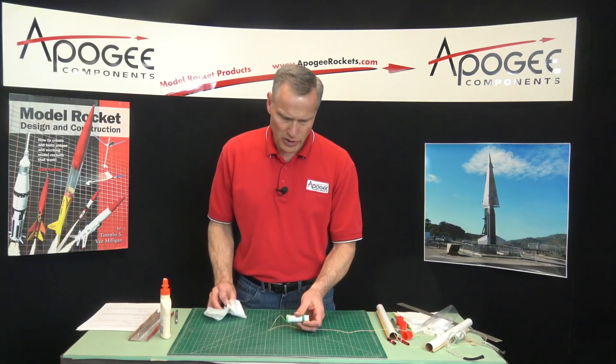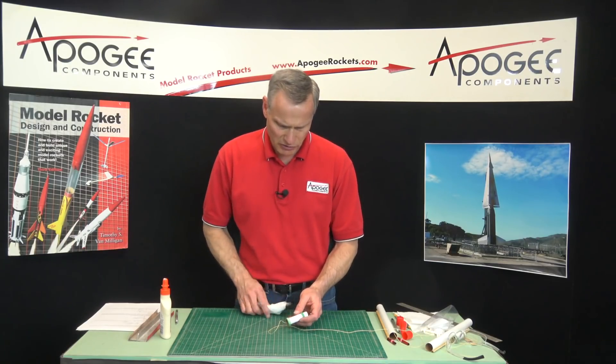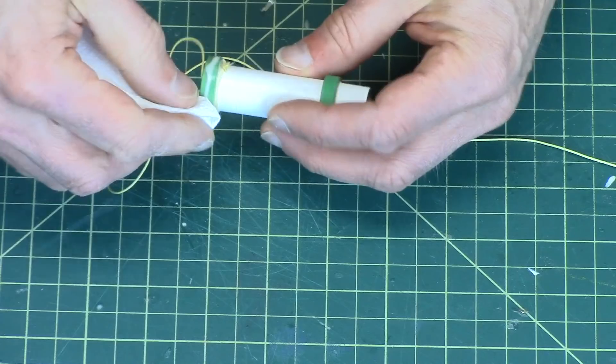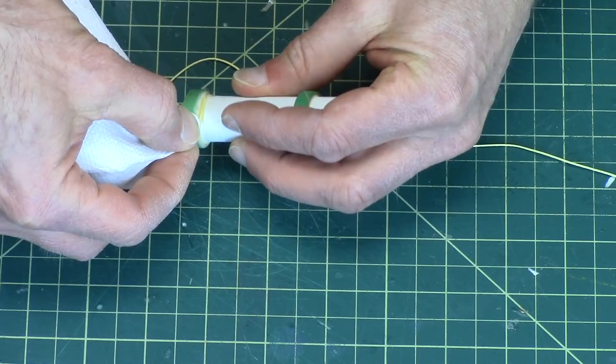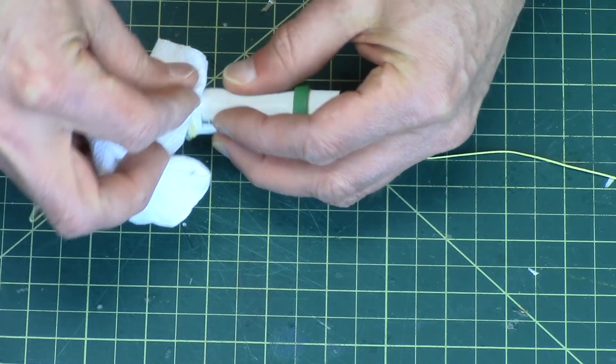Now any glue that's on the outside of that green ring you want to wipe off, and you want to do it really quick because you don't want that drying. Otherwise it's going to make it really hard to slide this green ring into the tube here. So I'm going to let this dry.